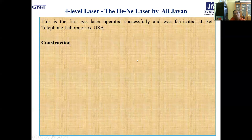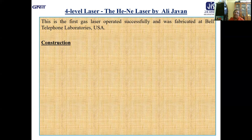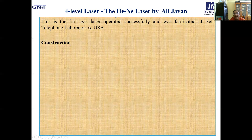Now let us move to the four-level laser system. Ruby laser was the first successfully fabricated laser and is a three-level solid-state laser. The helium-neon laser is a four-level gas laser, fabricated by Ali Javan and co-workers at Bell Telephone Laboratories, USA.